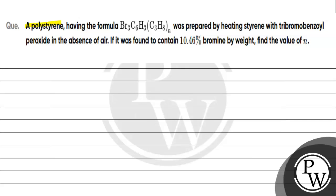Let's read this question. A polystyrene having the formula Br₃C₆H₃(C₃H₈)ₙ was prepared by heating styrene with dry bromobenzoyl peroxide in the absence of air. If it was found to contain 10.46% of bromine by weight, find the value of N.